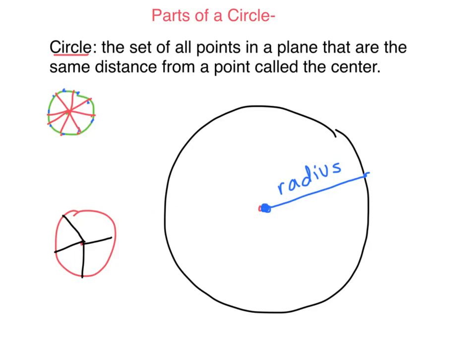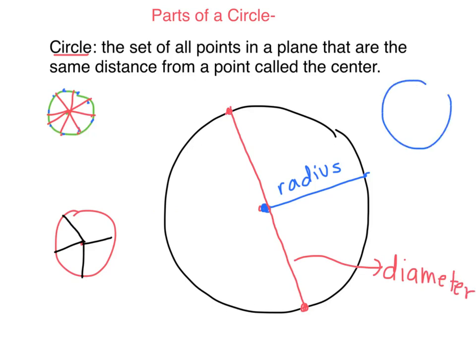Another part of a circle that you're going to need to know is something called a diameter. A diameter goes from the outside of a circle, goes through the middle, all the way to the other side. There's also more than one diameter in a circle — it just has to go through the middle, from the outside through the middle across to the other outside part.